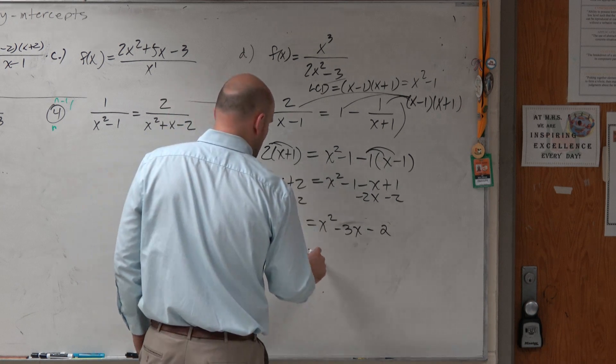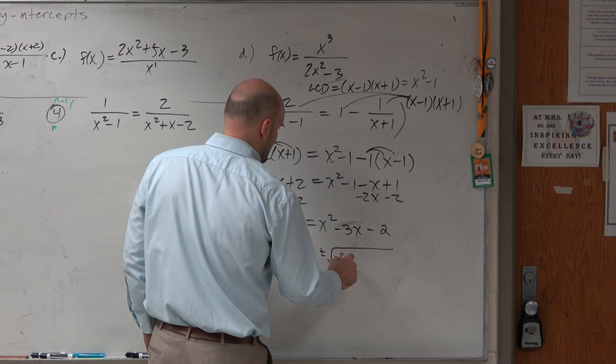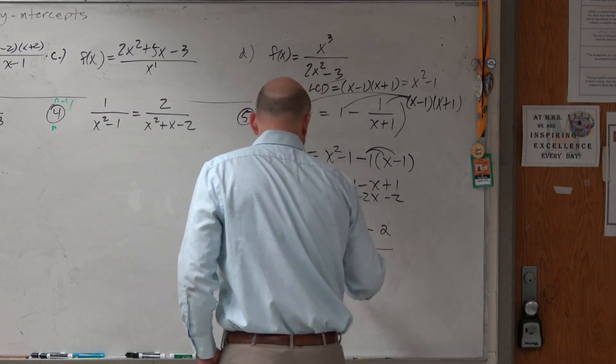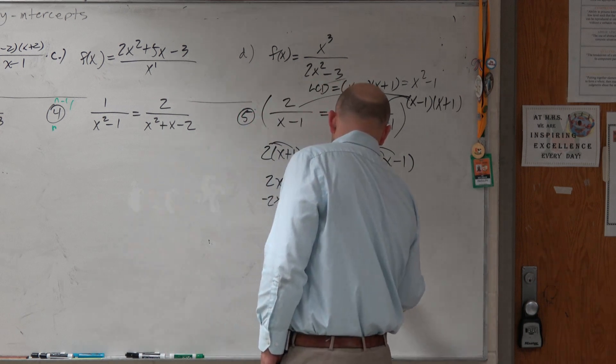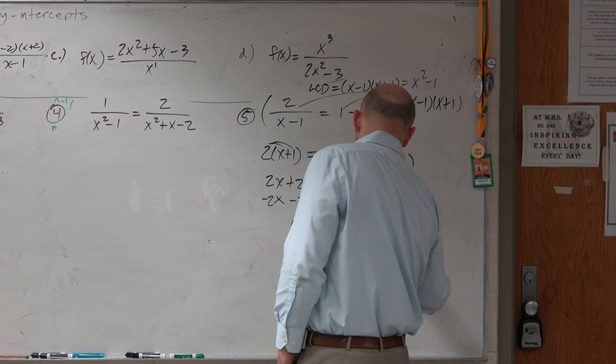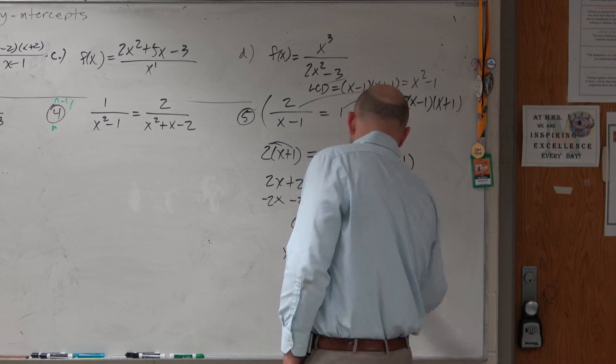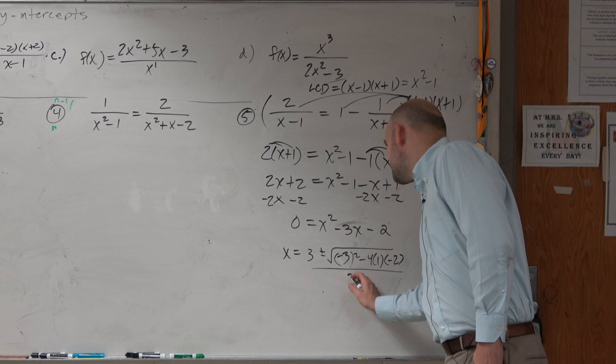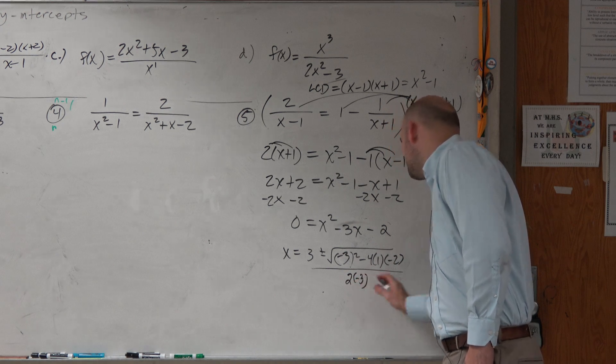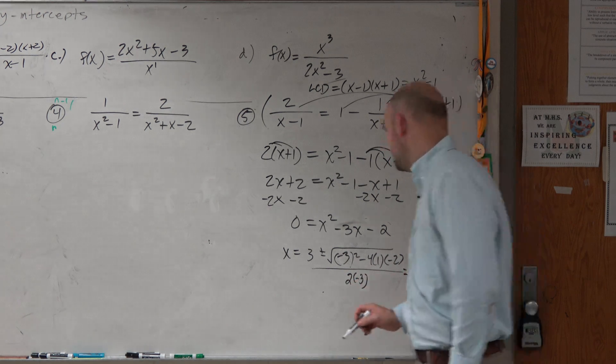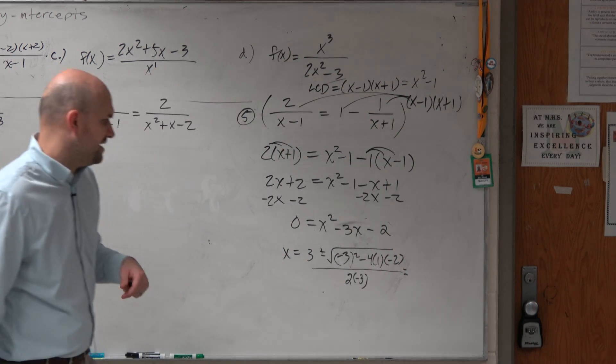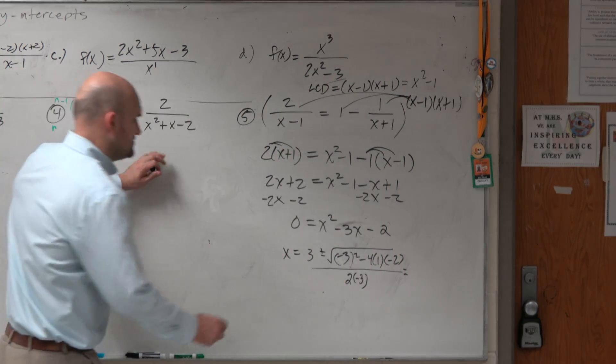So I have opposite of b plus or minus negative 3 squared minus 4 times a times c all over 2 times negative 3. And let's see.